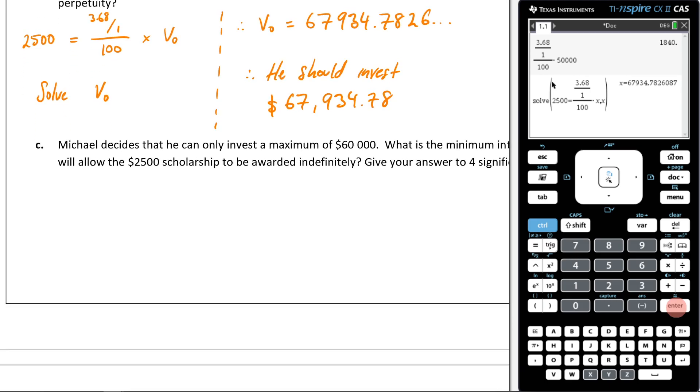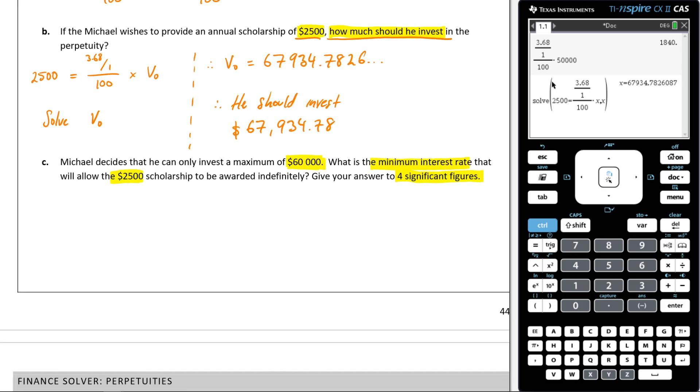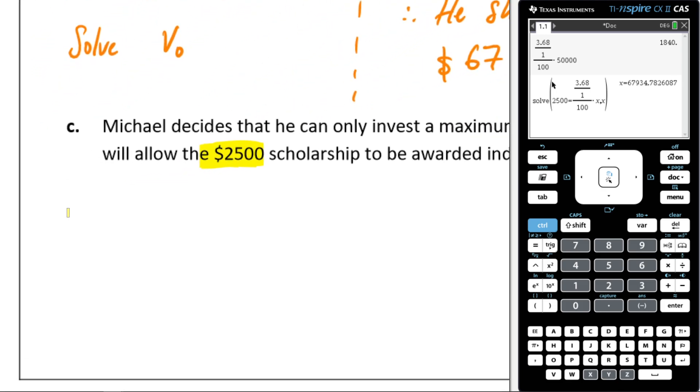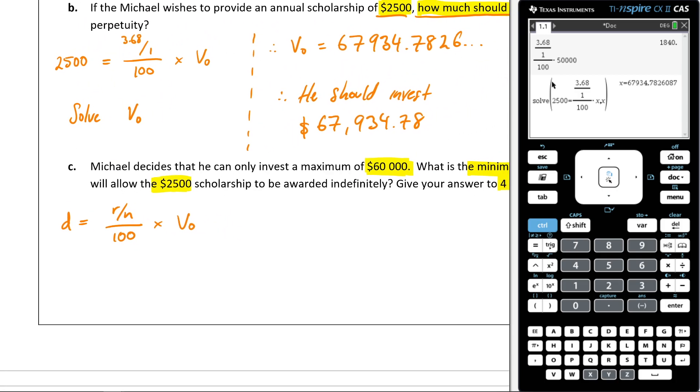Alright, the next one. It says Michael decides that he can only invest a maximum of $60,000. What is the minimum interest rate that will allow the $2,500 scholarship to be awarded indefinitely? Give your answer to four significant figures. Again, let's begin by writing down what our formula is for a payout or a perpetuity. So we're going to go D is equal to R over N over 100 times V₀. Don't write this out, let me do it, and then you can fill it out once we're done.